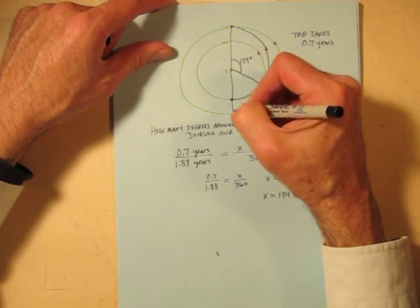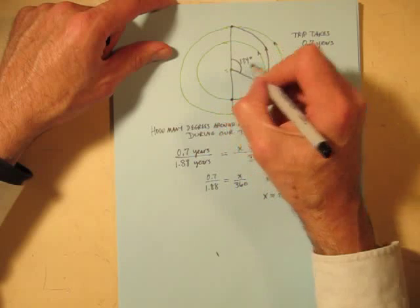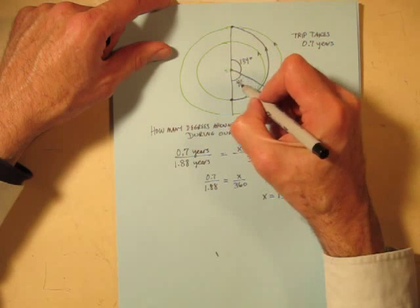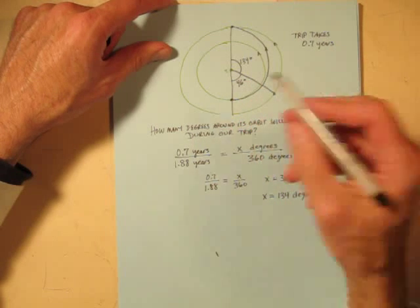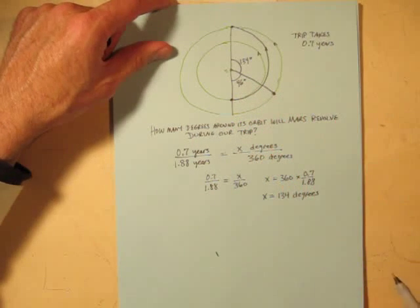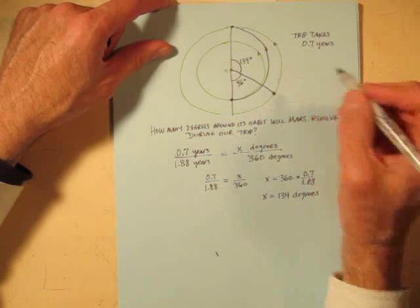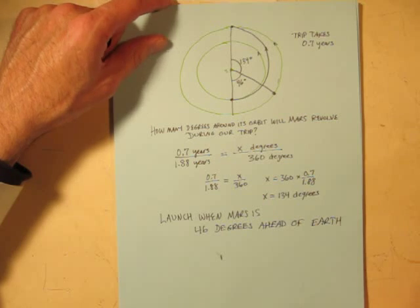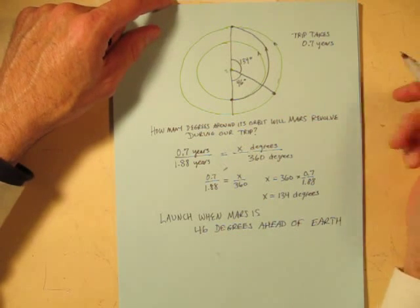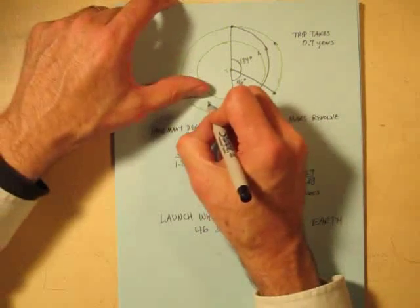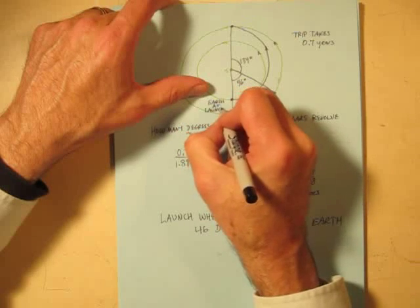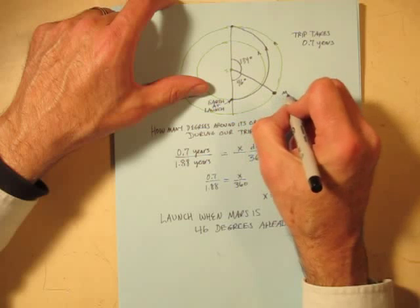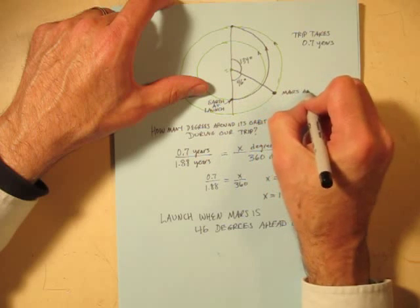That angle is 134 degrees. Let's see, I can draw the rest of the straight line through here. To finish out the straight angle, I need another 46 degrees. So you want to launch when Mars is 46 degrees ahead of Earth. So we're going to label this Earth at launch, right there. And this is Mars at launch.